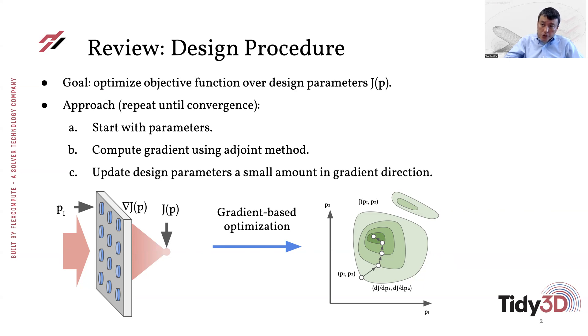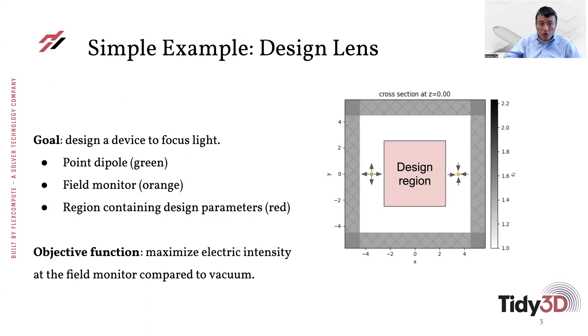So the key ingredient here is to compute the gradient. As we have discussed in the last lecture, there is a very efficient method called the adjoint method that allows you to compute the gradient of the objective function to arbitrarily large number of parameters in the system with only two simulations. And that very significantly speeds up and in many ways enables the optimization of these structures using the gradient method. So here in this lecture, we would like to give you an example so that you can see how this actually works in practice.